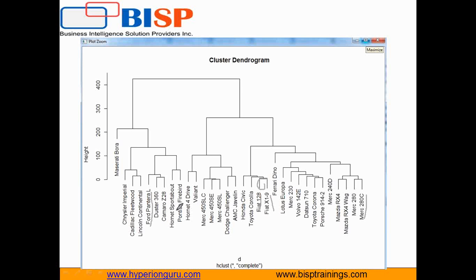We first partition the set of data into groups based on data similarity and then assign labels to the groups. The main advantage of clustering over classification is that it is adaptable to changes and helps single out useful features distinguishing different groups. Clustering analysis is broadly used in real-time applications such as market research, pattern recognition, data analysis, and image processing.